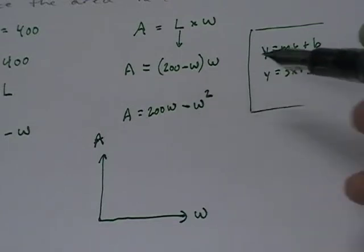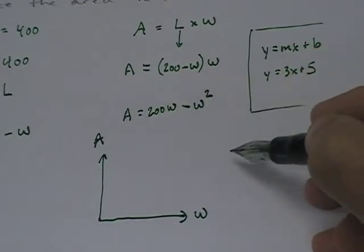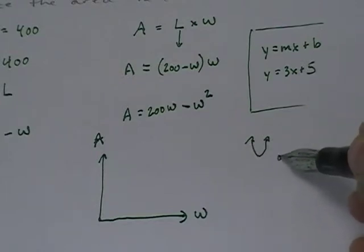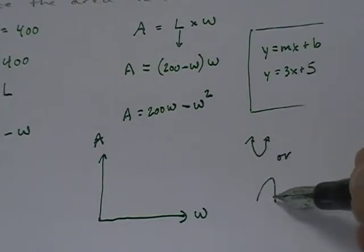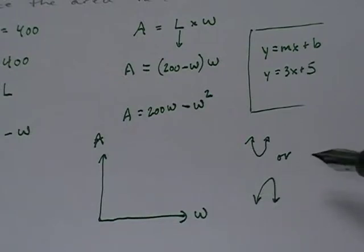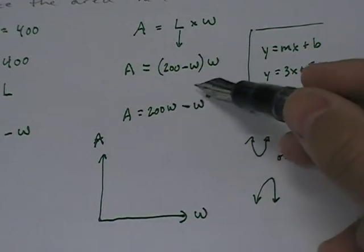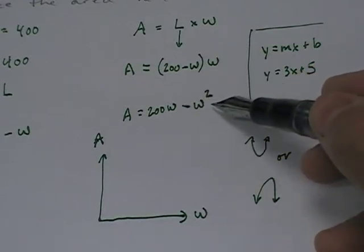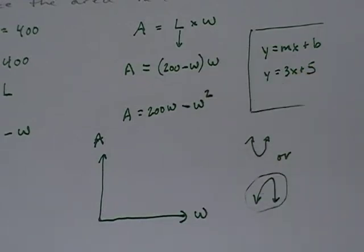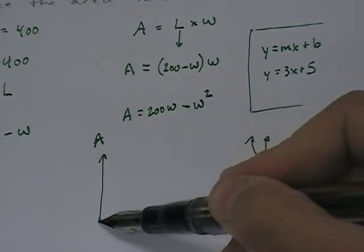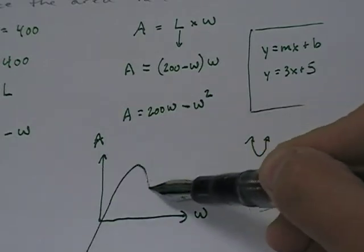It's an x squared type equation and that's going to give us a shape that's either this or this. And the sign of the x squared component determines that it is, in fact, a downward facing parabola. So if we graph this, it's going to look something like this.